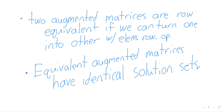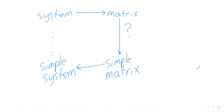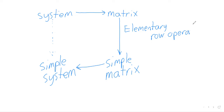Equivalent — or row equivalent, though we sometimes get sloppy and drop the 'row' — augmented matrices have identical solution sets. So the things we're going to do to this matrix to make it simpler are the elementary row operations. And because two row-equivalent augmented matrices have the same solution sets, this system and the simple system have the same solution set. We can solve the simple system and it's the same as solving the more complicated system.